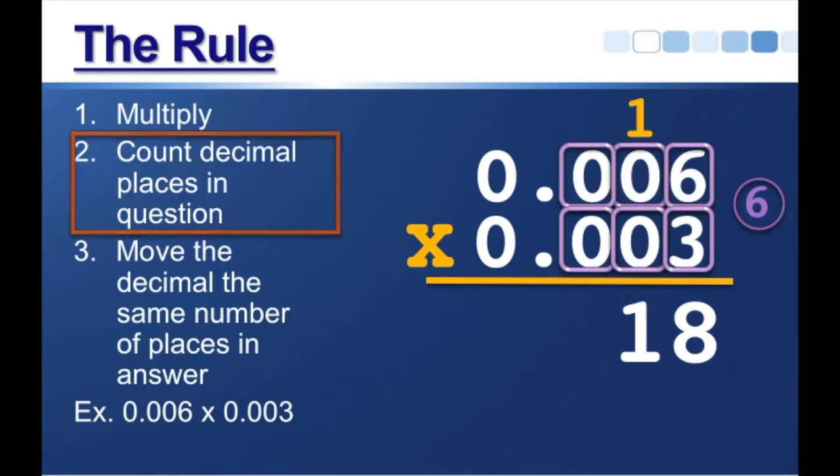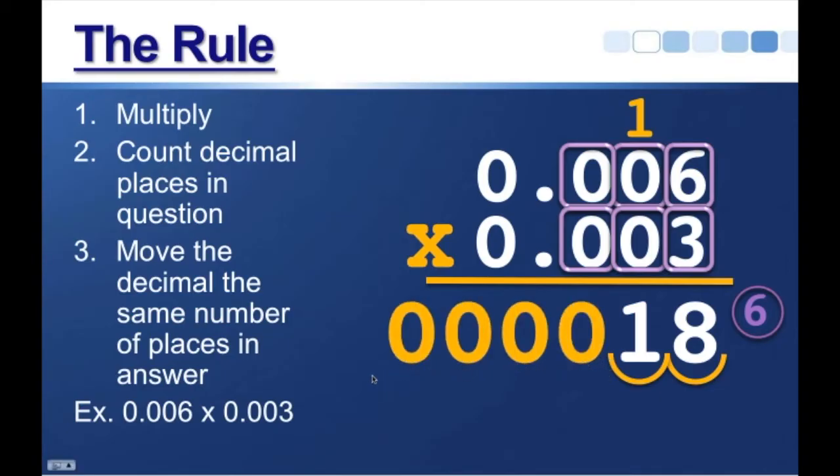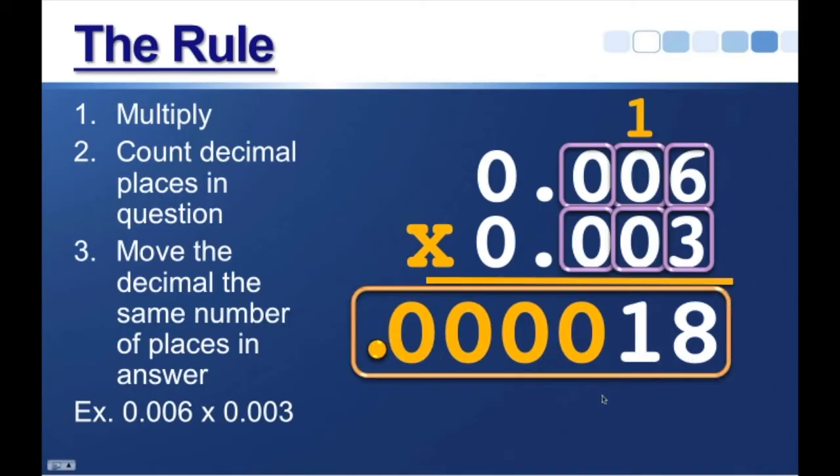This means we have to move 6 decimal places in our answer. But the issue is we don't have enough places to move. So we'll move 1, 2 places, but we still have how many more places to go? Well, if we had to move a total of 6 places, and we've only moved 2 so far, well, we're going to have to annex 4 0's, 1, 2, 3, 4. Now I can move the 4 extra spaces. That makes a total of 6 places. My final answer is .000018.